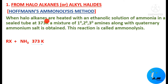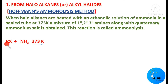When the haloalkanes or alkyl halides are heated with an ethanolic solution of ammonia in a sealed tube at 373 Kelvin, a mixture of primary, secondary, and tertiary amines along with a quaternary ammonium salt is obtained. This reaction is called ammonolysis. When R-X is heated with ammonia, we get R-NH2.